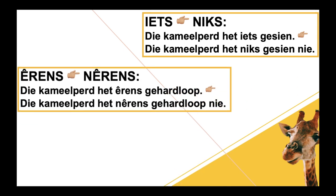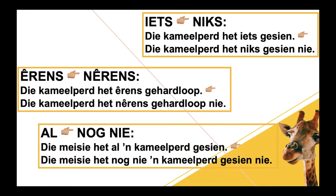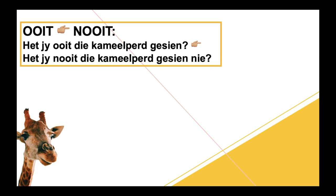'Êrens' changes to 'nêrens' — somewhere changes to nowhere. 'Die kameelpaard het êrens gehardloop' becomes 'die kameelpaard het nêrens gehardloop nie.' And then this one is so important: 'al' changes to 'nog nie' — 'al' does not change to just 'nog'. 'Nog' on its own is not a negative word; it has to be accompanied by something else. So 'die meisie het al een kameelpaard gesien' changes to 'die meisie het nog nie een kameelpaard gesien nie.' 'Ooit' changes to 'nooit' — ever changes to never. 'Het jy ooit die kameelpaard gesien?' becomes 'Het jy nooit die kameelpaard gesien nie?'